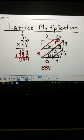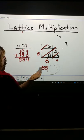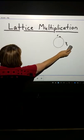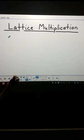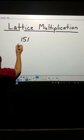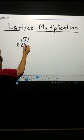This strategy can also be used for larger numbers. 3 digits, 4 digits, 5 digits, and so on. I'm going to demonstrate one more. Using a 3-digit number, I'm going to multiply 151 times 212.